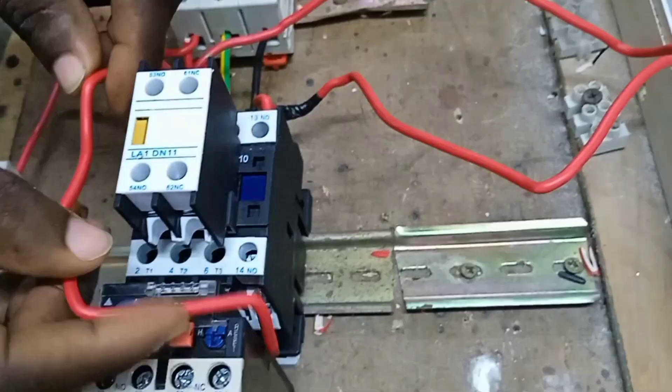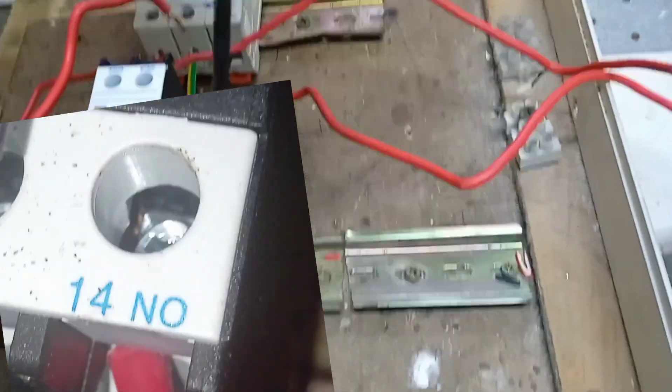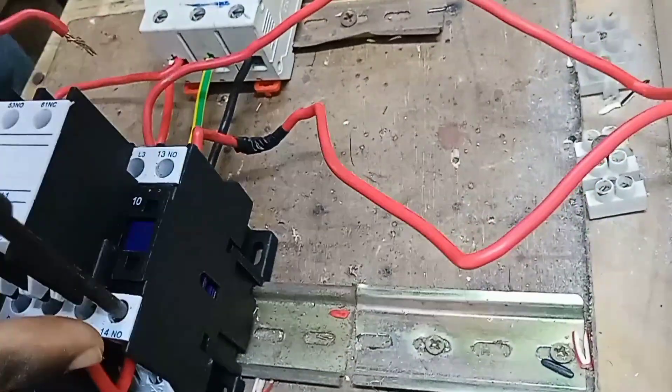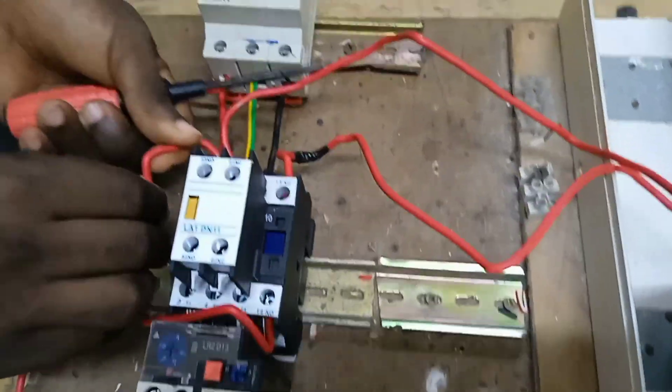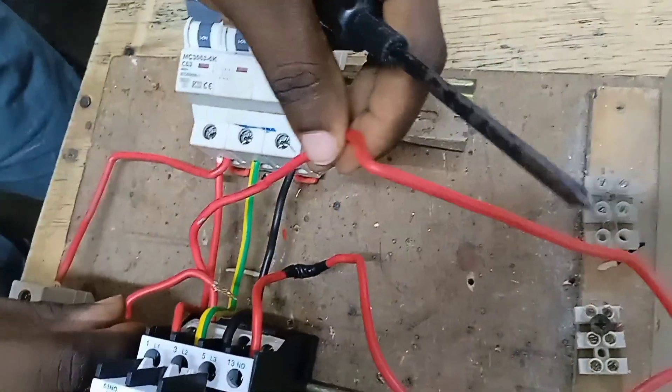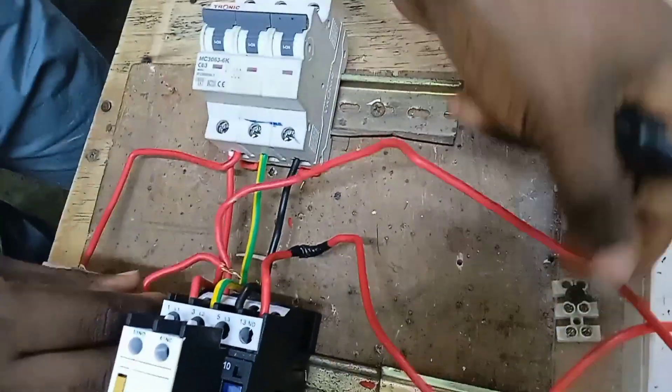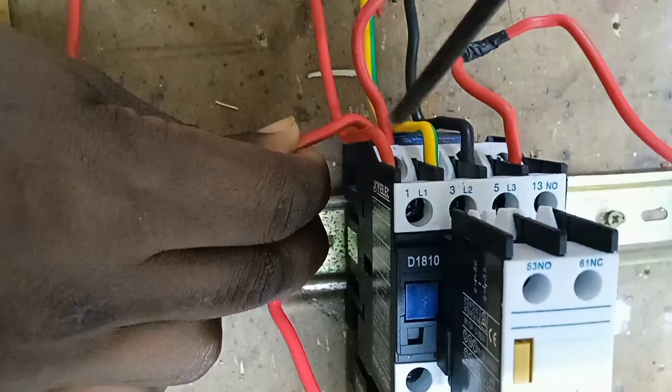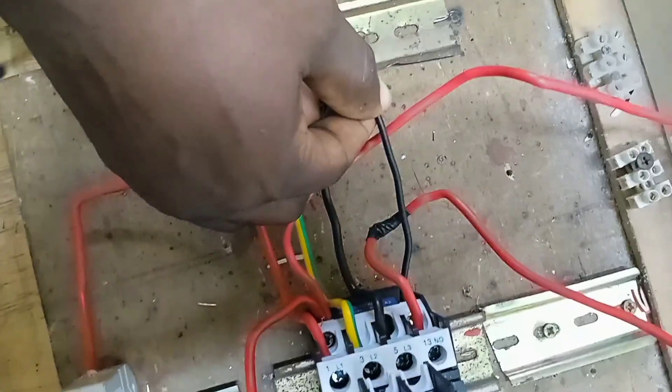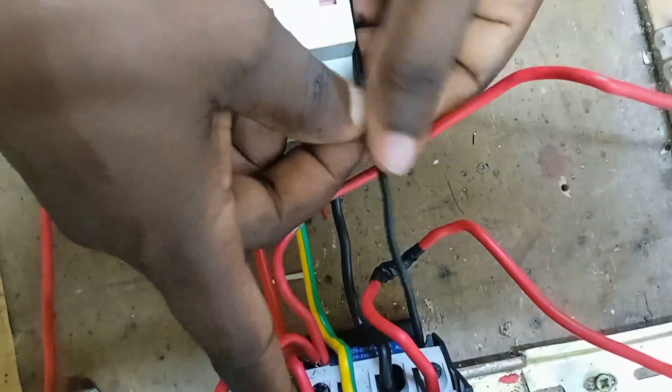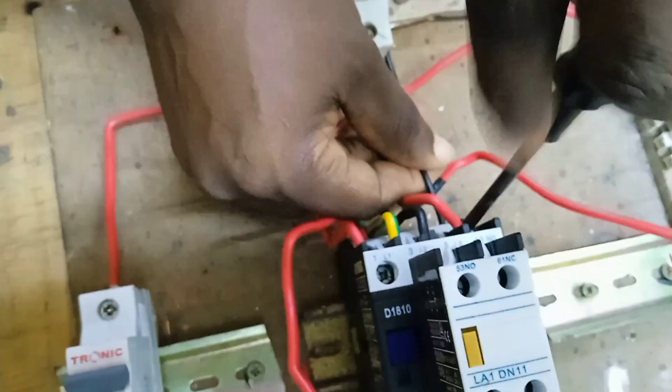We connect this cable to A14. And this cable, we are going to connect it to A15. This cable we are taking to A1 together with the output of the start push button here. We have connected them to A1 like you can see. From A2 here, you can see A2, we are going to connect the neutral. We have connected the neutral to A2.